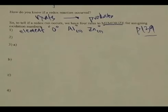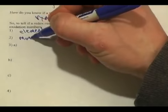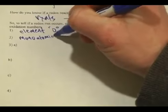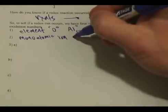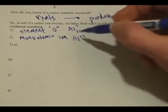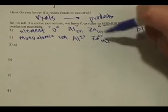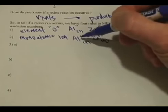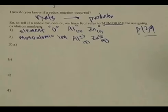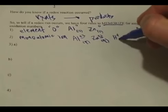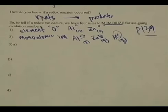Rule number two: for any monatomic ion — mono meaning one, atomic meaning one atom — the charge is whatever is on that ion. For example, if it was aluminum ion, Al³⁺, the charge would be plus three. If it was Zn²⁺ aqueous, the charge would be positive two. Or if it was H⁺ aqueous in solution, like an acid, the plus means it's a positive one charge.